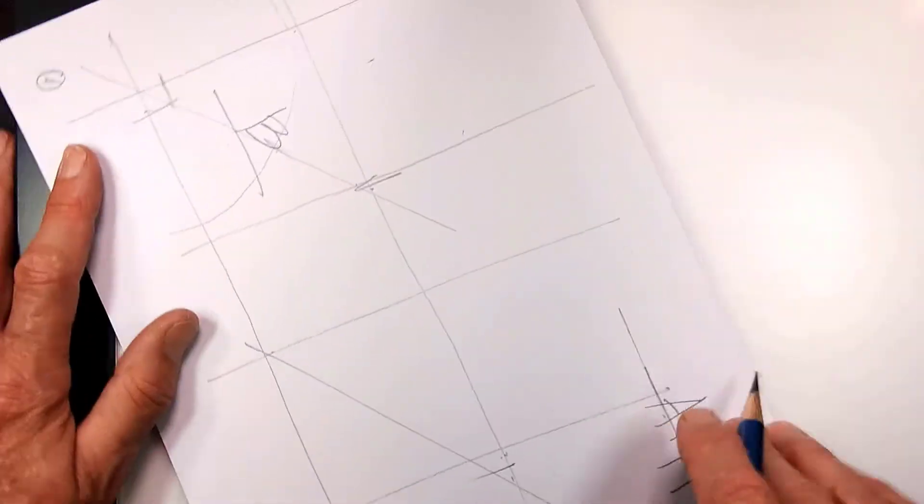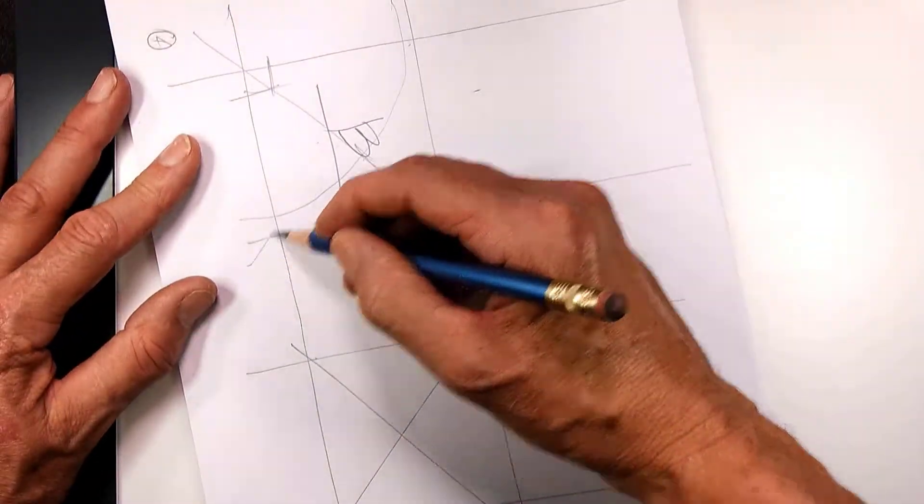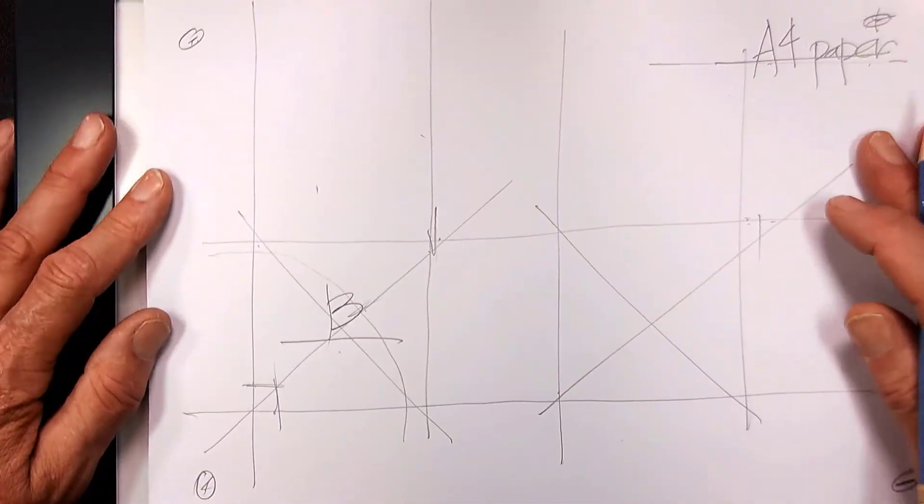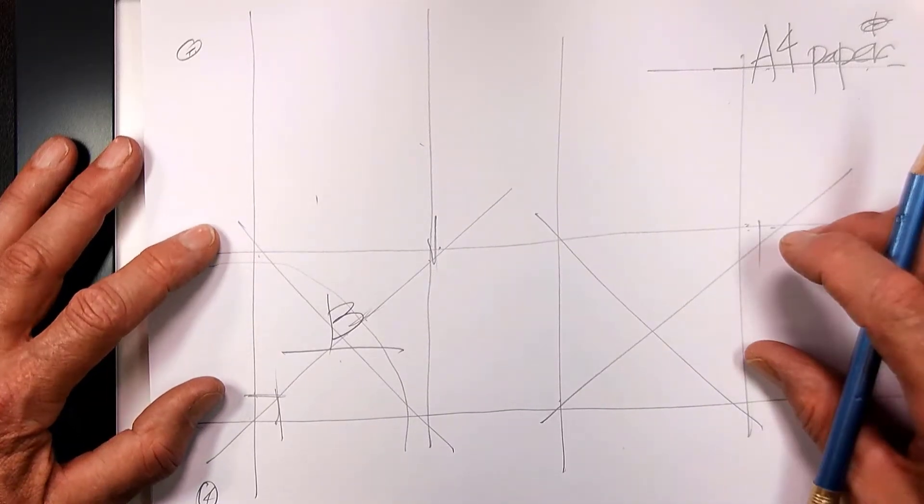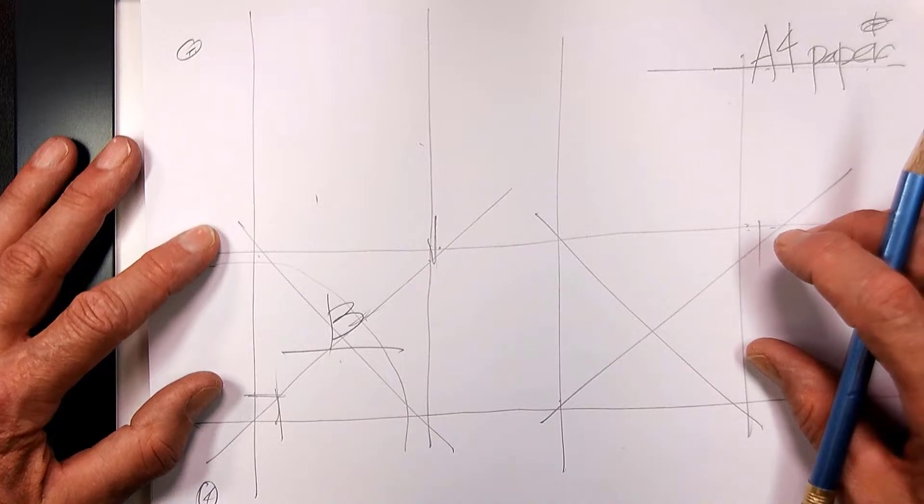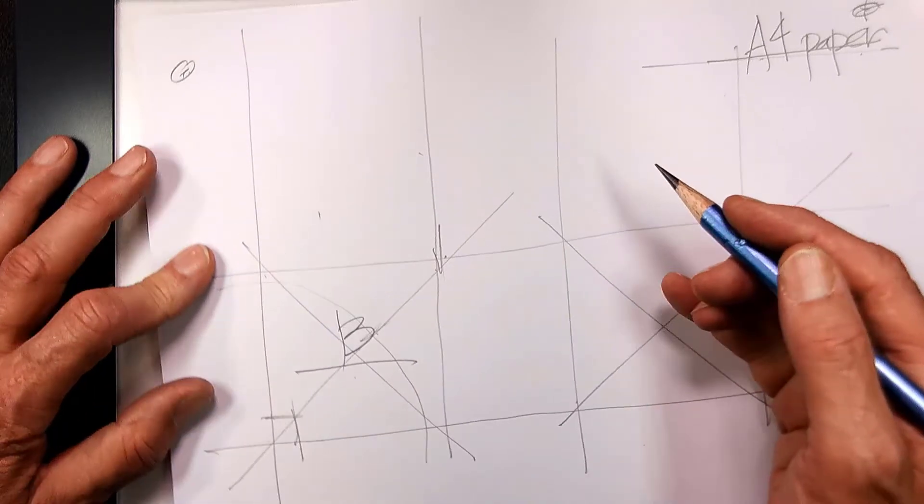And then I'm going to draw the other diagonals. It's very important that you draw diagonals because that helps you subdivide your squares, and we're going to do that often with sketching.